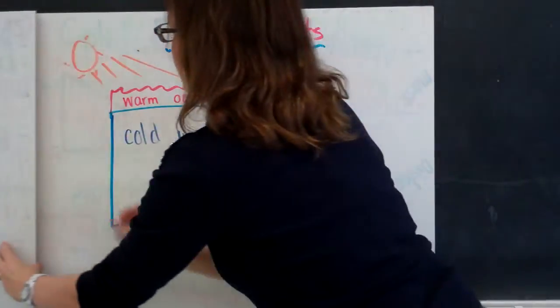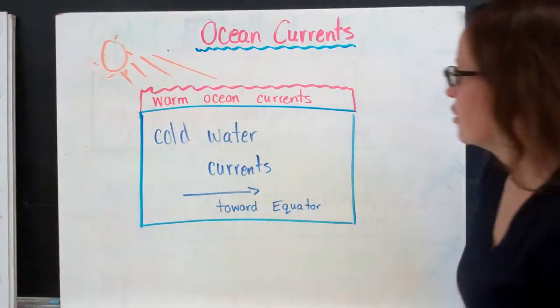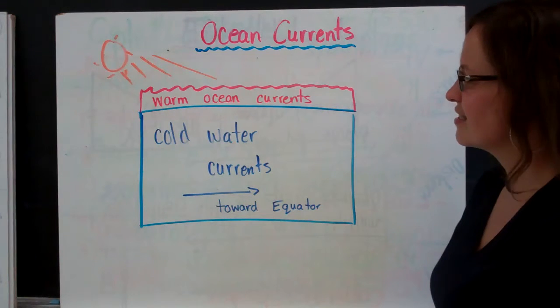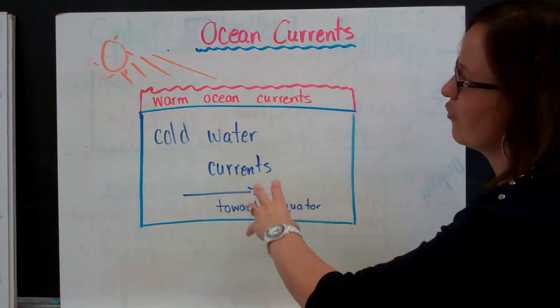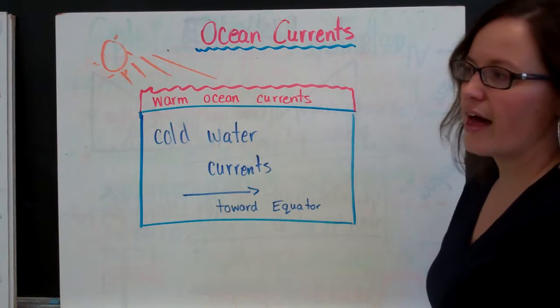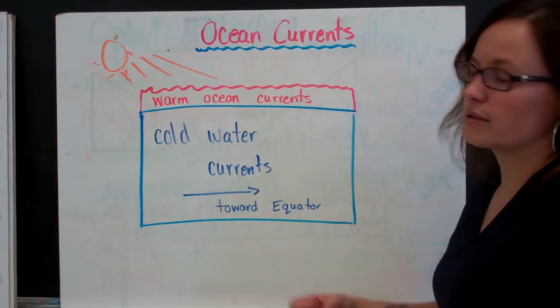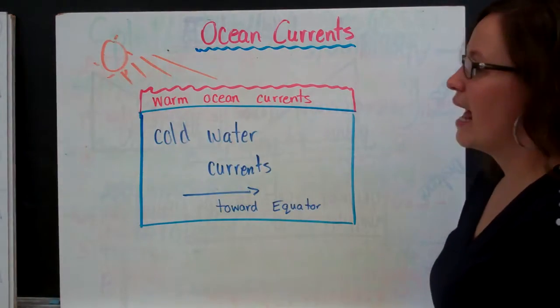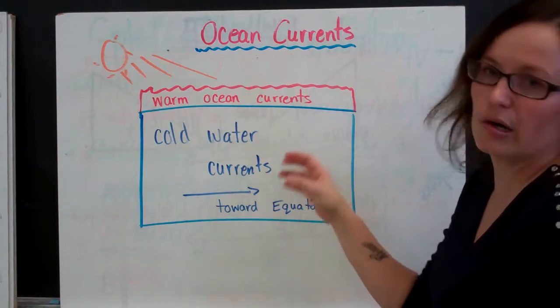And finally, ocean currents. So water makes up 70% of the earth's surface and 90% of the water are cold water currents. The water is so deep that most of the water is cold. The top layer of the water gets heated by the sun and it's considered a warm ocean current.